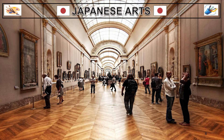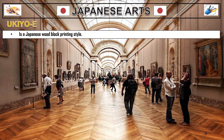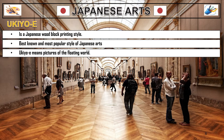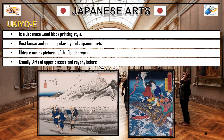Woodblock printing started in China and eventually became a printing method for paper during the old times. This method was adopted in Japan during the Edo period, from 1603 to 1867, and became one of the oldest and most highly developed visual arts. It is the best known and most popular style of Japanese art, called Ukiyo-e, which means 'picture of the floating world.' Japanese painting and later printmaking depict scenes from everyday life and narrative scenes that are often crowded with figures and details.